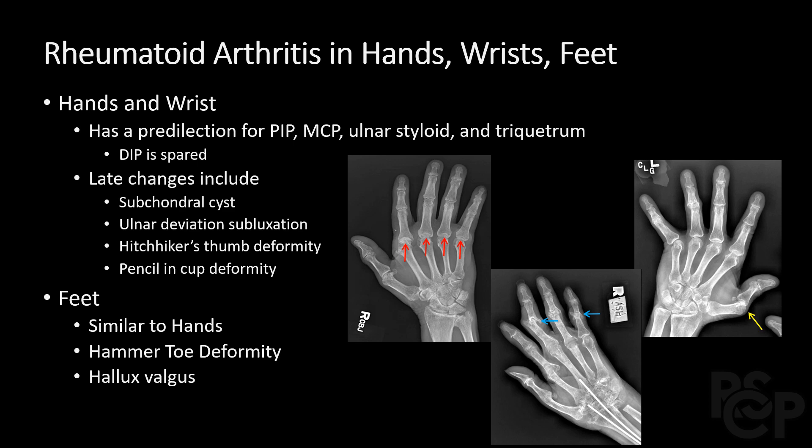The feet have similar areas of rheumatoid arthritis to the hands. They also have the hammer toe deformity and hallux valgus.